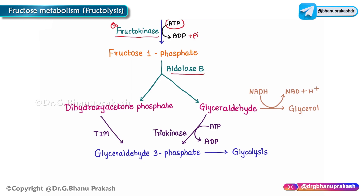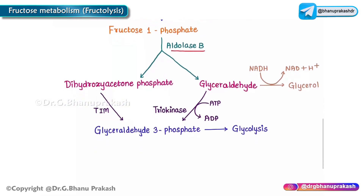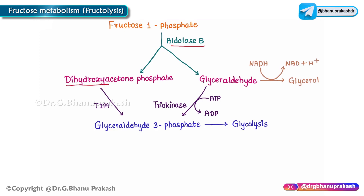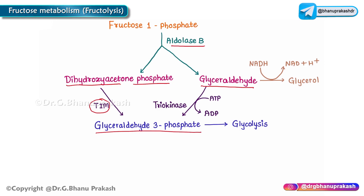In the next step, aldolase B catalyzes the cleavage of fructose-1-phosphate to generate two important molecules: dihydroxyacetone phosphate (DHAP) and glyceraldehyde. The DHAP is then immediately converted to glyceraldehyde-3-phosphate, mediated by the enzyme triosephosphate isomerase (TIM).